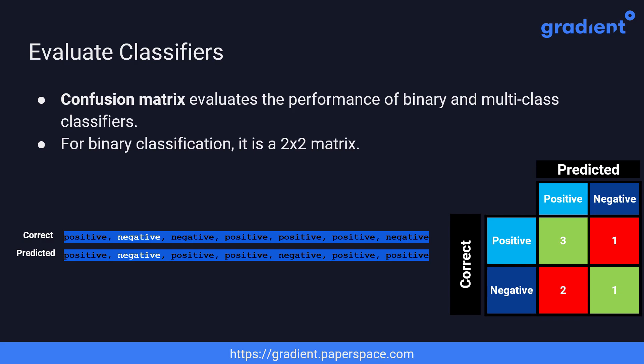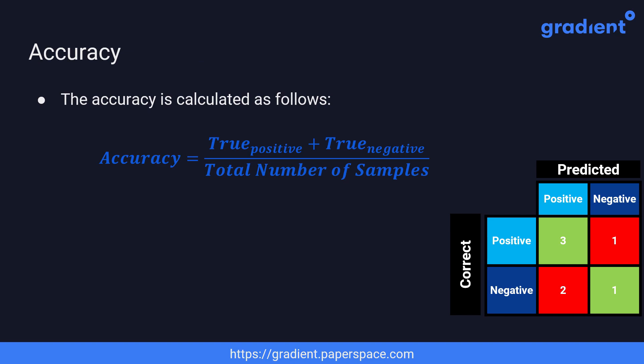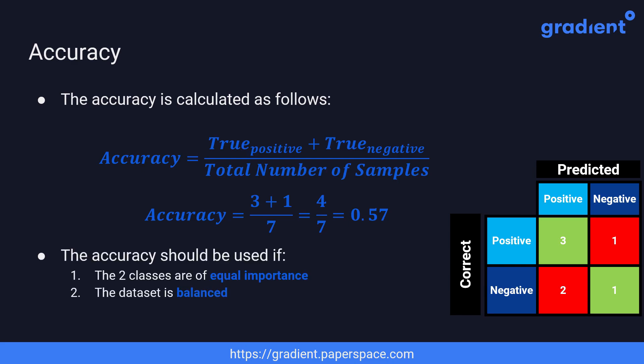After building the confusion matrix, let's look at three important metrics: accuracy, recall, and precision. Accuracy is the ratio of correctly classified samples to the total number of samples — the sum of true positives and true negatives. In our example, three true positives plus one true negative gives an accuracy of 0.57. You should only use accuracy if the two classes are of equal importance and the dataset is balanced.